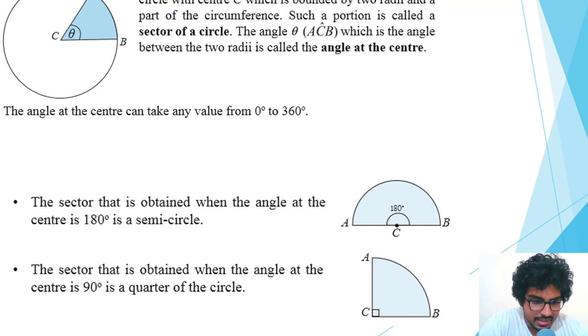The sector that is obtained when the angle at the center is 90 degrees—if this theta becomes 90 degrees, it has to be a quarter of the complete circle. If you take one-fourth of 360 degrees, it results in a 90 degree angle. I hope this part was clear for you.